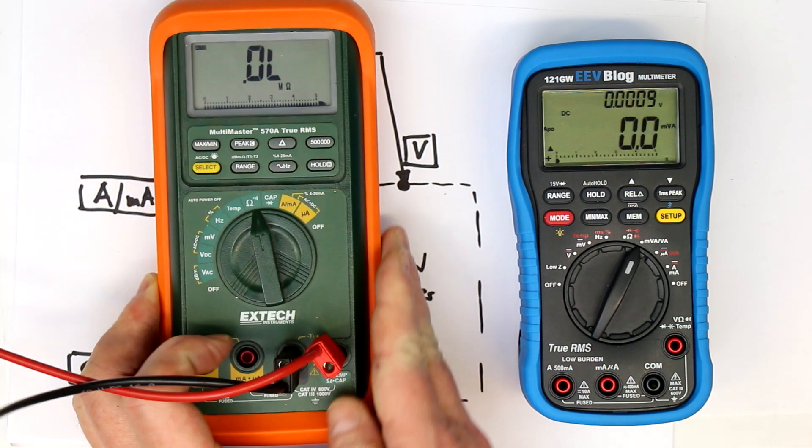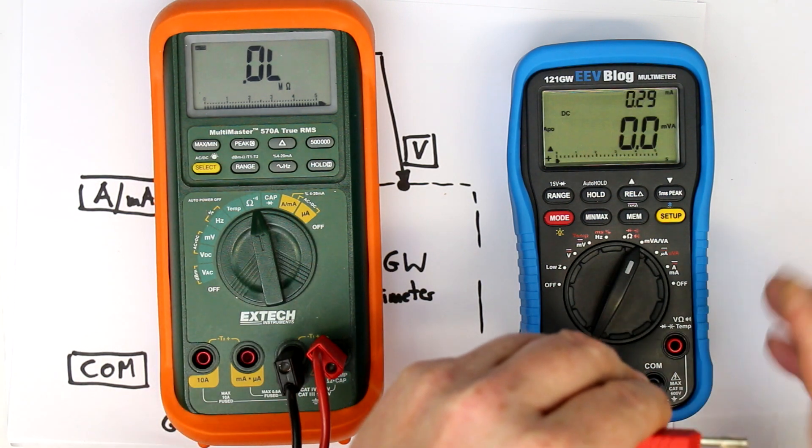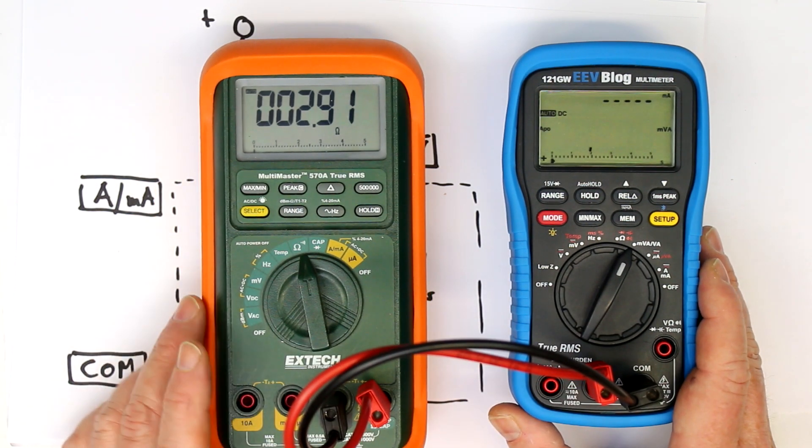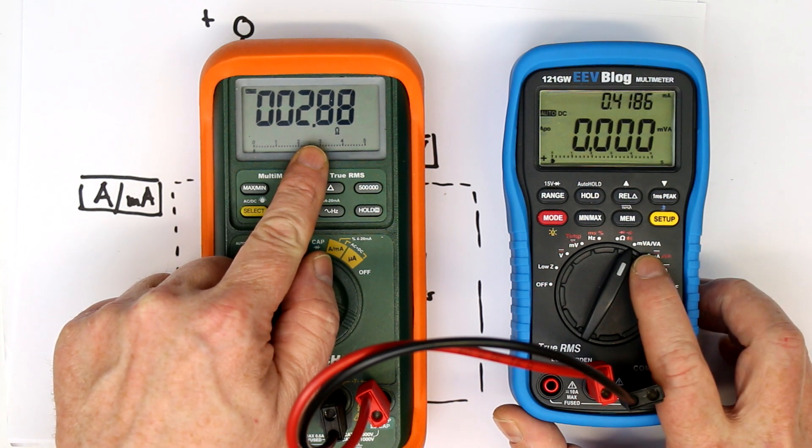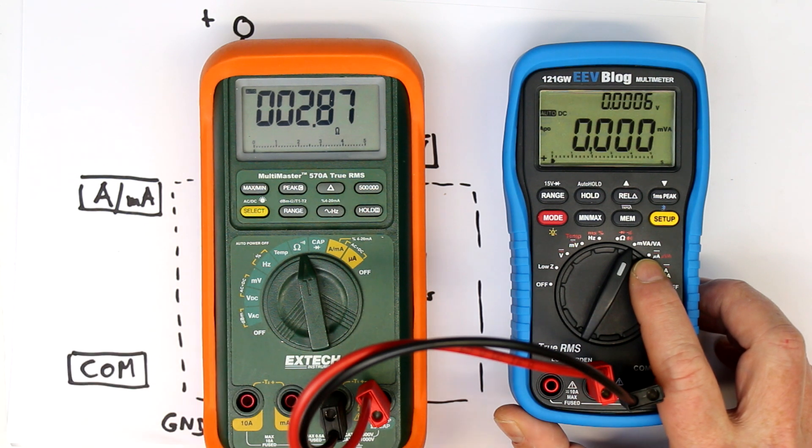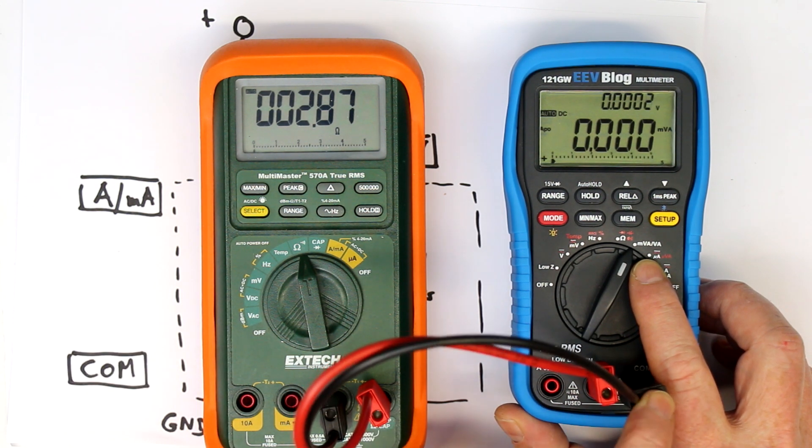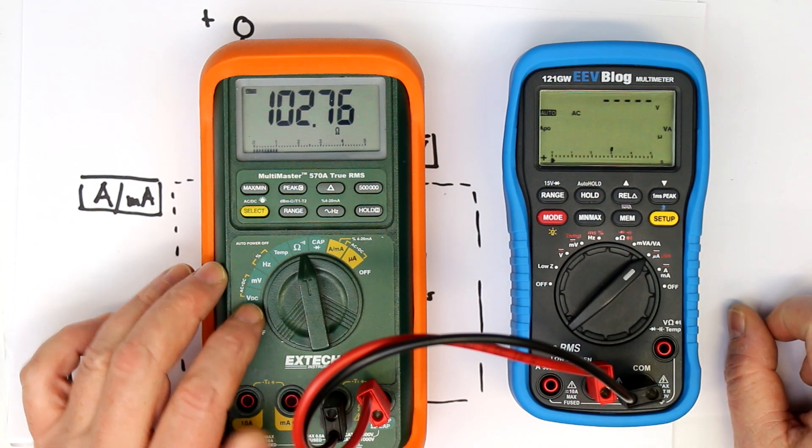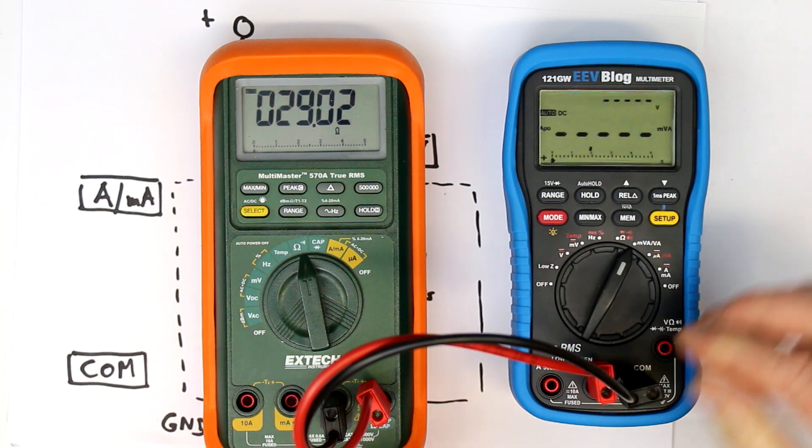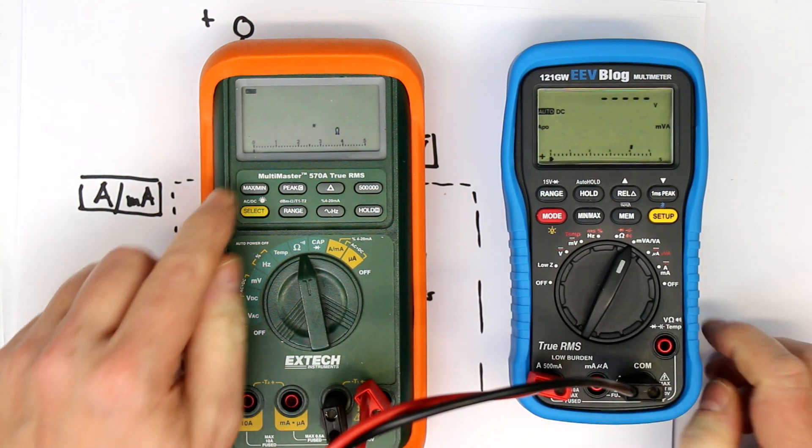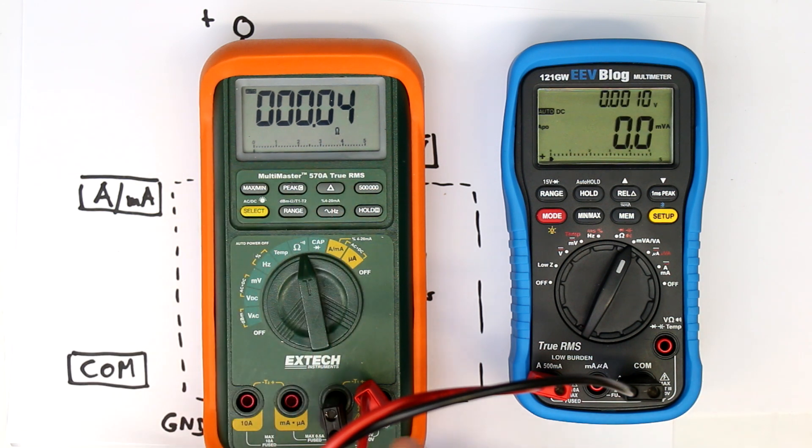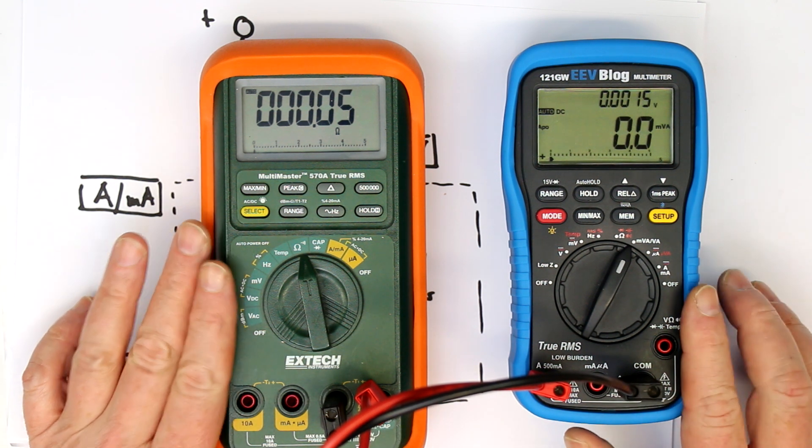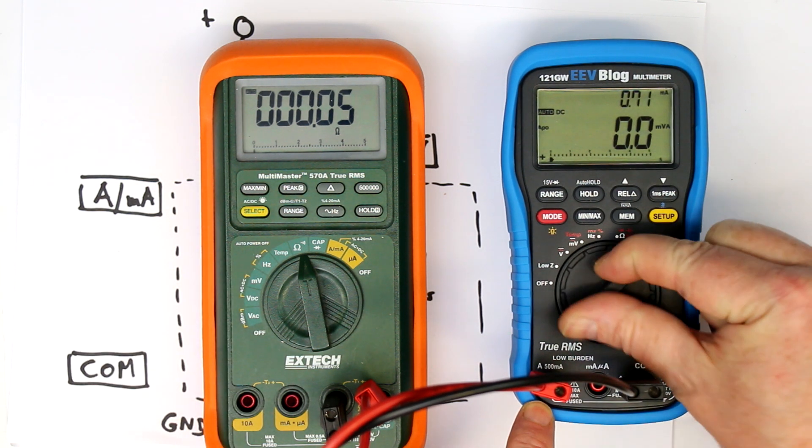Let's start with measuring the shunt resistance in the amps and milliamps terminal. You can see in the milliamps region we have 2.88 ohms all in all. I've not nulled out the resistance of the test leads and contact resistance, so let's leave this at 2.8 something. In the microamps range we have 102.8. If we go to the amps terminal, that should be a few milliohms—50 milliohms minus the lead resistance minus the contact resistance. So we have three different shunt resistors depending on the input terminal and range.